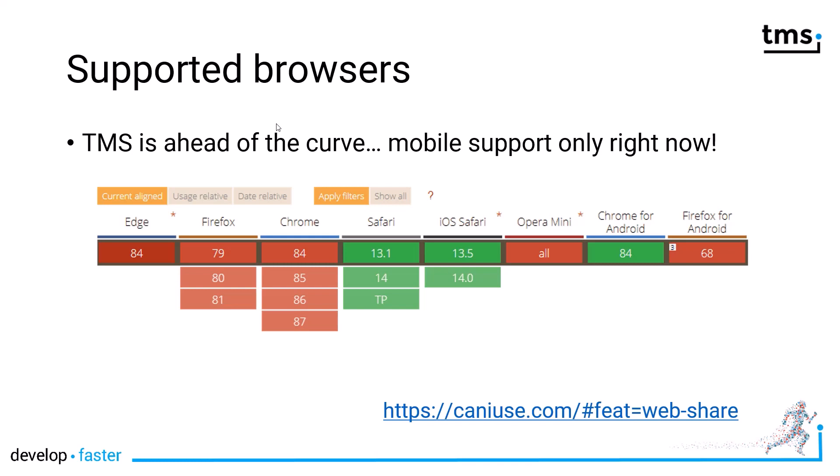Especially as Apple announced plans to more and more unify the mobile operating system with its desktop operating system. As you can see on the mobile side, you cover both iOS and Android devices on recent browsers. This picture is taken from kenuse.com and you can dig into the numbers using the link given on the slide.